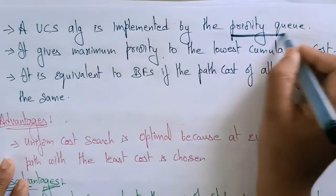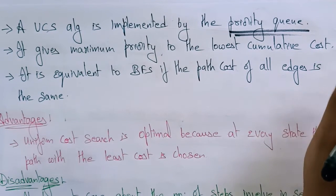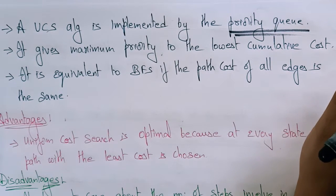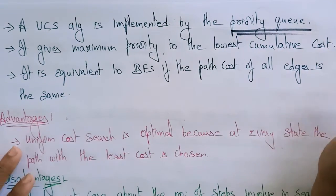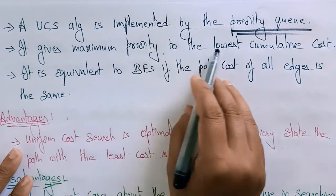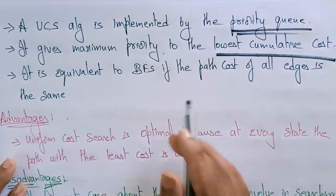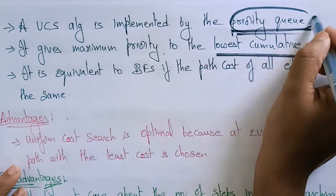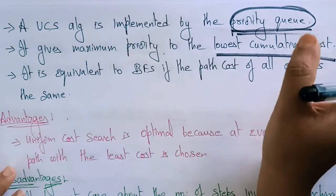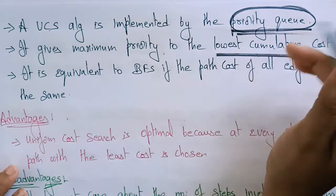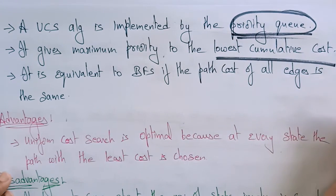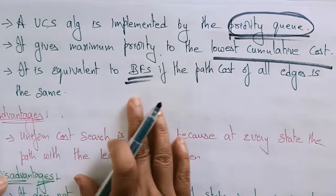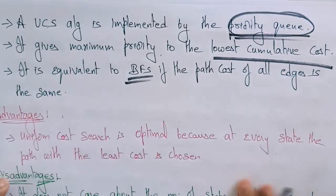The Uniform Cost Search algorithm is implemented using a priority queue. The priority queue gives maximum priority to the lowest cumulative cost. It is equivalent to Breadth First Search if the path cost of all edges is the same.